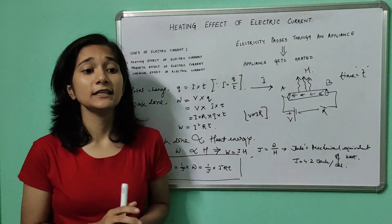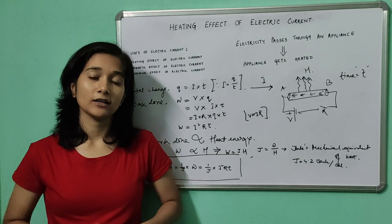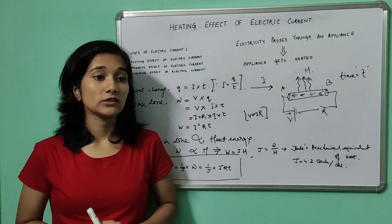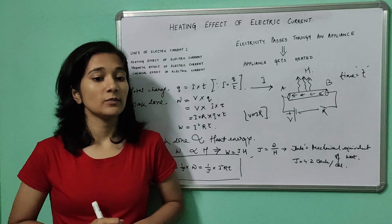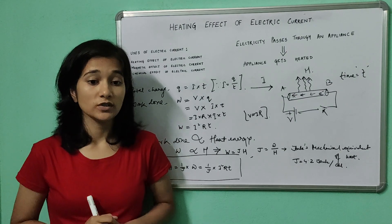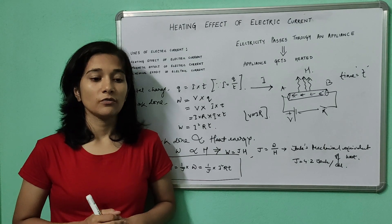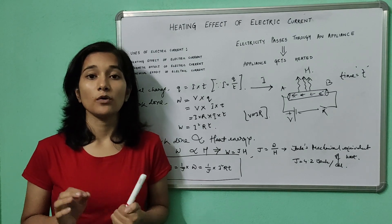So this heating effect of electric current is used in many appliances like electric geyser, electric iron, electric kettle, etc. And this phenomenon is also utilized in a safety device called the electric fuse for protecting household wiring and electrical appliances from accidental large flow of currents.